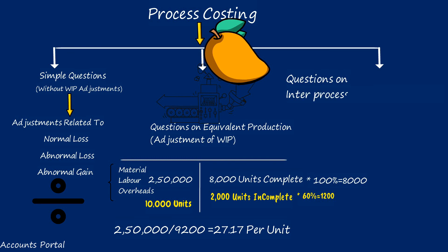The third section is inter-process profit and transfers, which will be explained when solving problems. In this section, one process transfers goods to the next process at a profit. Please consider subscribing and hit the like button if you enjoyed the process costing concept. Bye for the day.